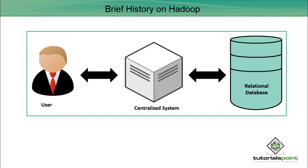Google provided one solution to this problem. Google solved it with an algorithm called MapReduce. This algorithm divides the task into smaller parts and assigns them to many low-cost computers. After finishing the job, it takes the output from different systems and merges them all to create the final required output. Hadoop was originally developed for the Nutch search engine project by Doug Cutting and his group.